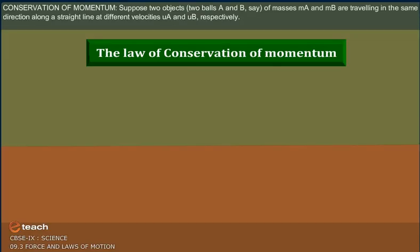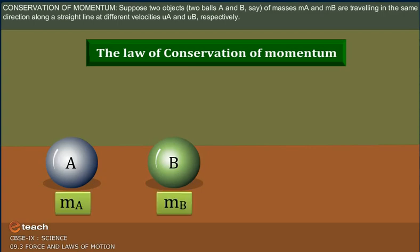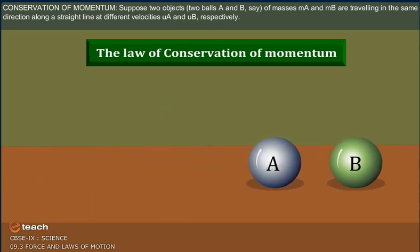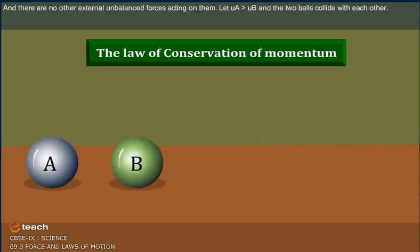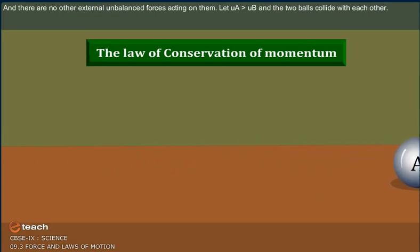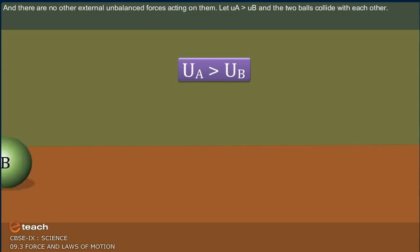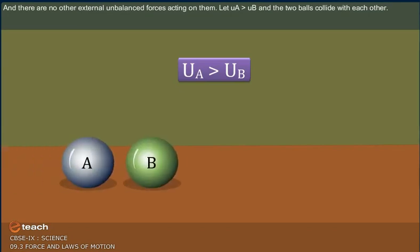Conservation of momentum. Suppose two objects, two balls A and B, of masses MA and MB, are traveling in the same direction along a straight line at different velocities UA and UB respectively, and there are no other external unbalanced forces acting on them. Let UA be greater than UB and the two balls collide with each other.